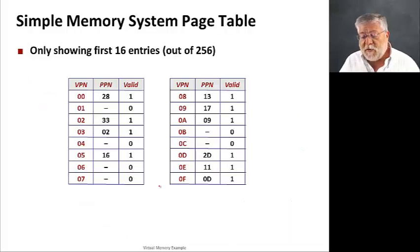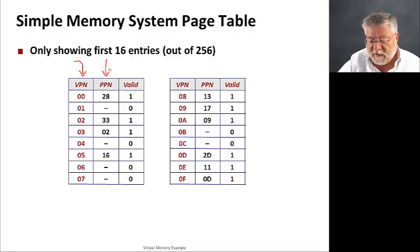The page table for this system is going to have three columns: a virtual page number, the corresponding physical page number, and then a valid bit, signifying whether that particular entry is valid or not. Here, on this diagram, I'm only showing the first 16 entries.